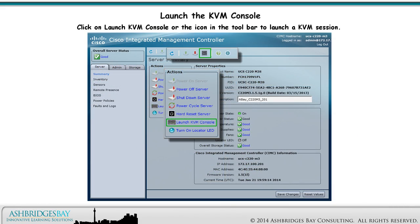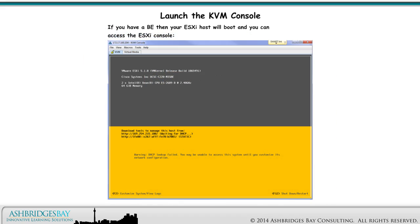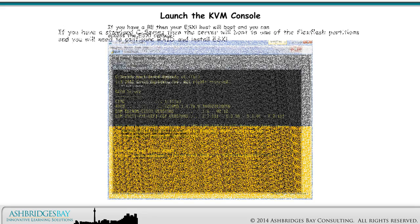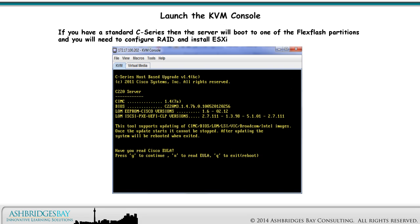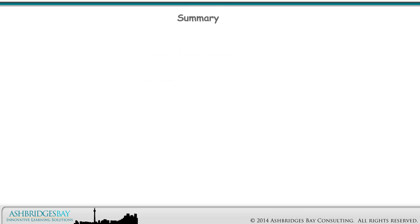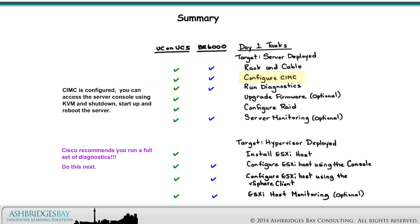Click on Launch KVM Console or the icon in the toolbar to launch a KVM session. If you have a BE, then your ESXi host will boot and you can access the ESXi console. If you have a standard C Series, then the server will boot to one of the FlexFlash partitions and you will need to configure RAID and install ESXi. CIMC is configured — you can access the server console using KVM and shutdown, start up, and reboot the server. Cisco recommends you run a full set of diagnostics. Do this next.